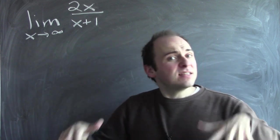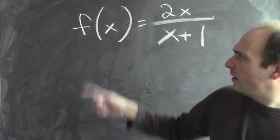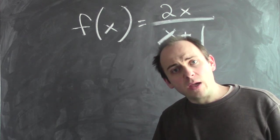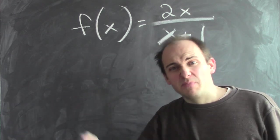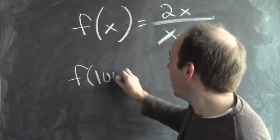Before we dive into this analytically, let's get some numerical evidence. So here's my function again, f of x equals 2x over x plus 1. I want to know qualitatively what happens when I plug in big numbers into this function. So what's f of 100?